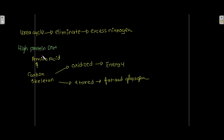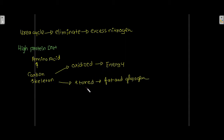During a high protein diet, the carbon skeleton of amino acids is either oxidized to get energy or stored as fat and glycogen. If you are on a high protein diet and consuming more protein, the carbon skeleton of the amino acids from those proteins serves these two purposes.